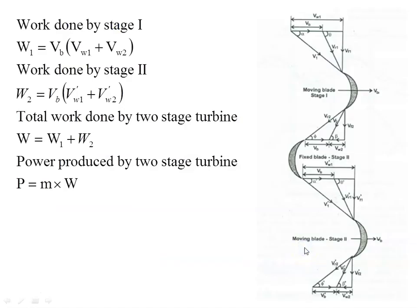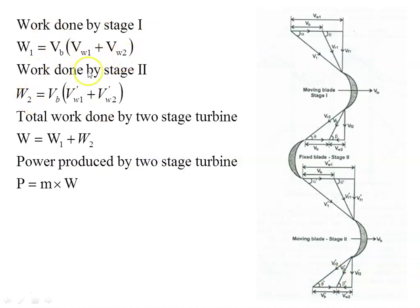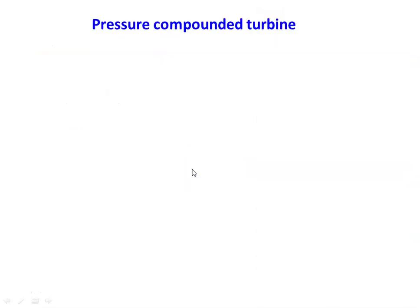The velocity triangles include inlet and outlet velocity triangles for moving blade one, the fixed blade, and moving blade two. Work done for stage one = Vb × (Vw1 + Vw2); work done for stage two = Vb × (Vw1' + Vw2'). Total work done W = W1 + W2, and power produced = mass flow rate × total work done.